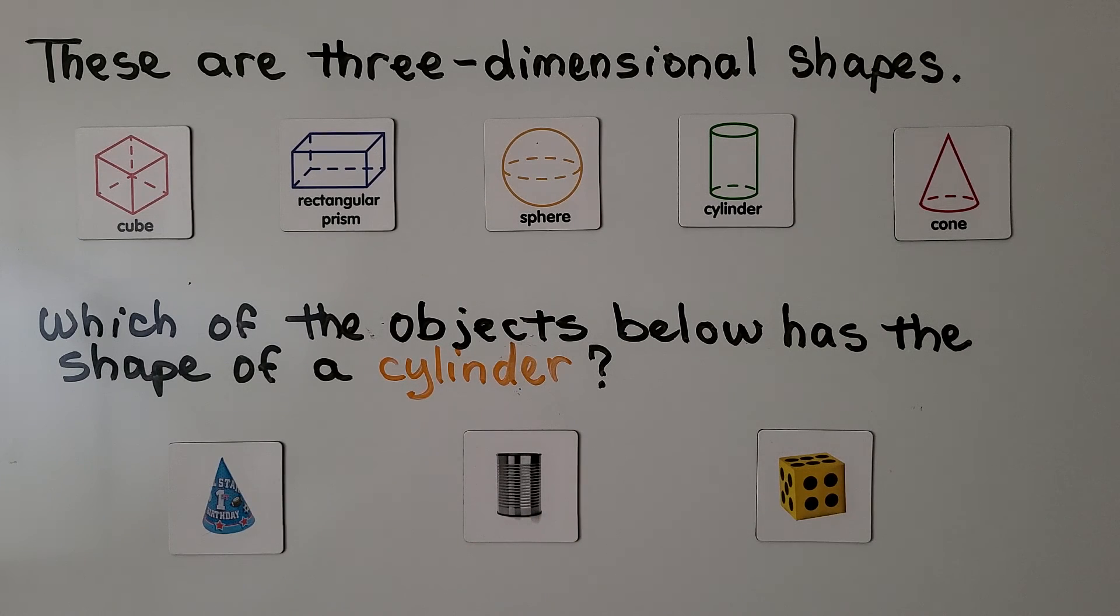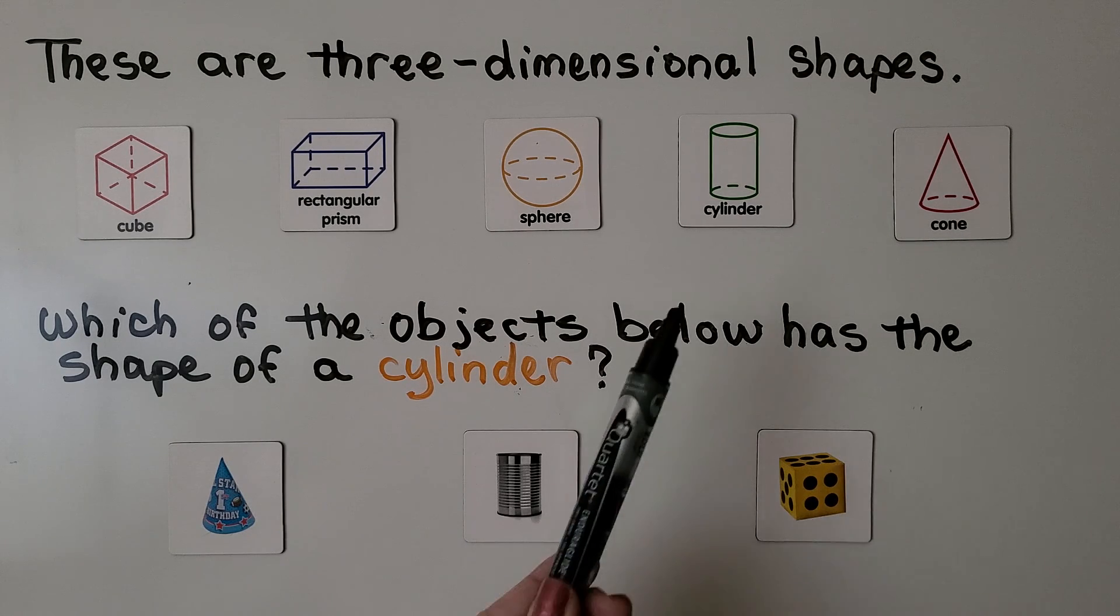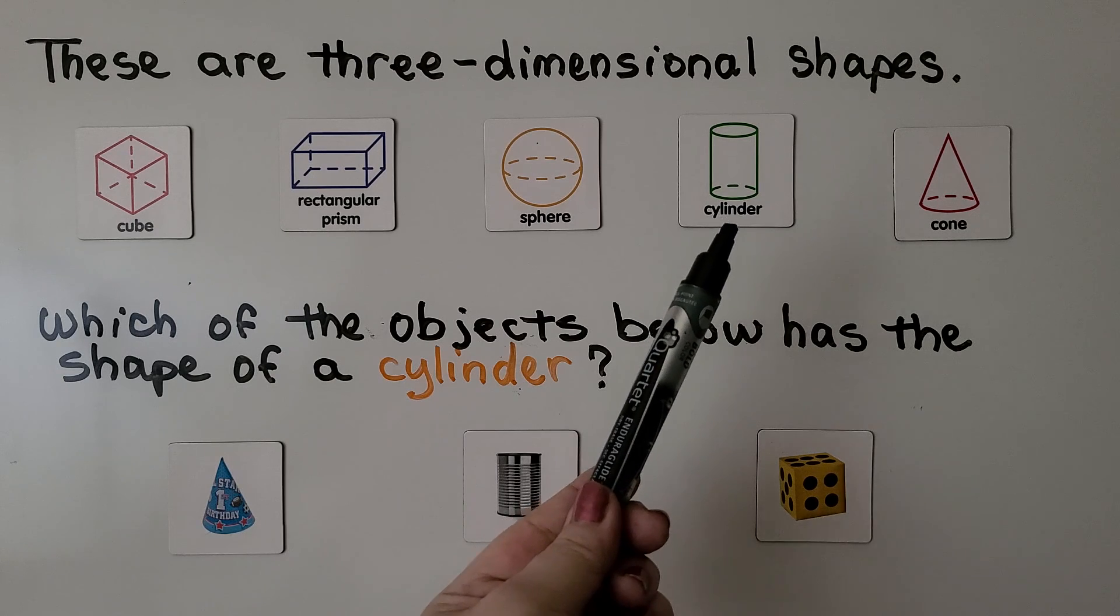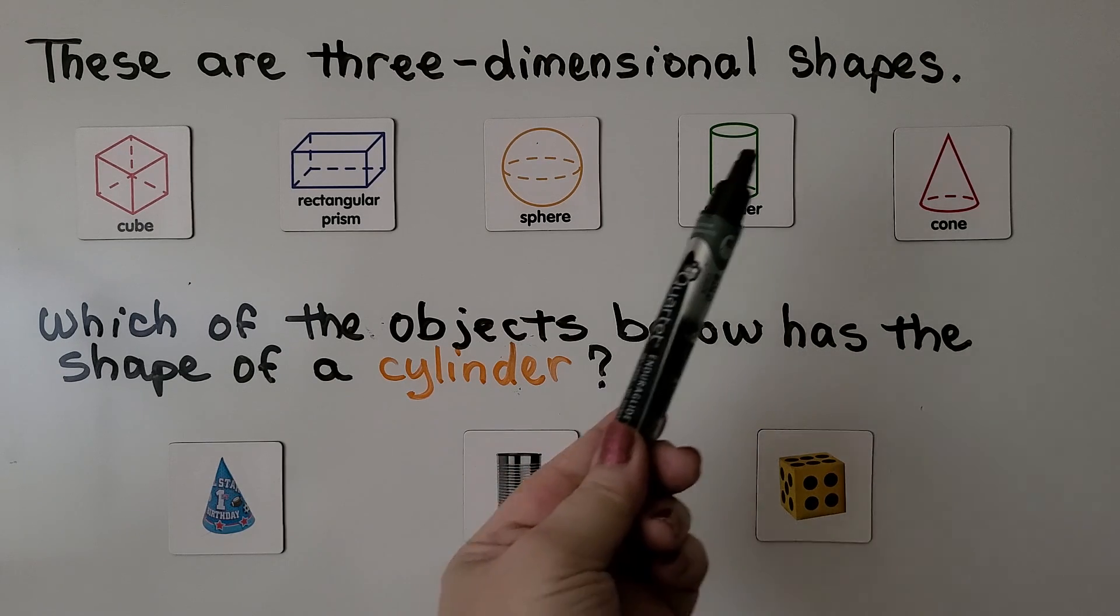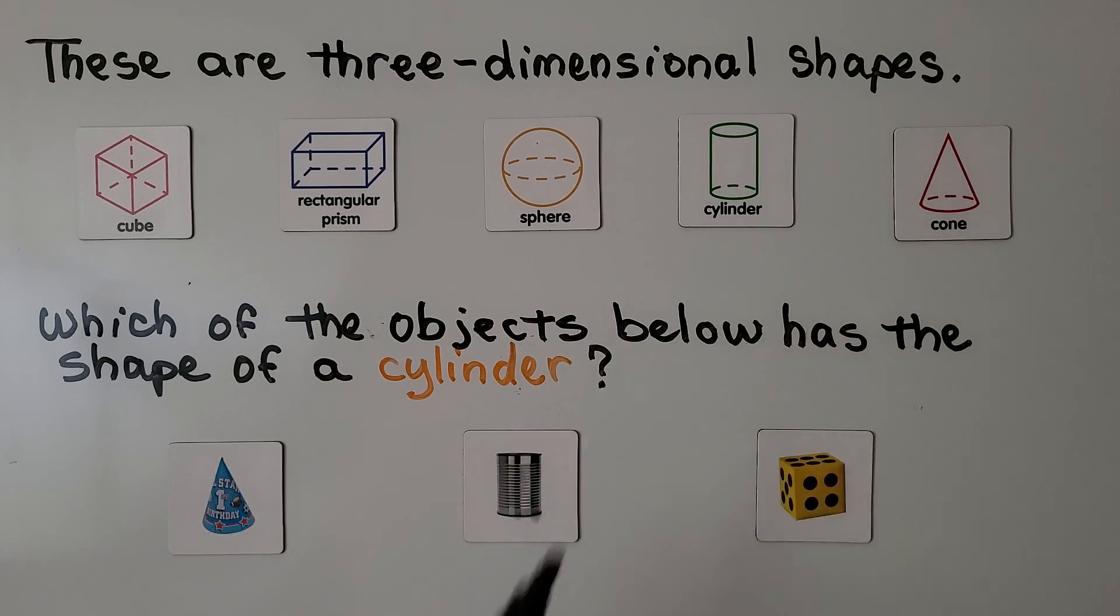Which of these objects below has the shape of a cylinder? When we look at the cylinder, we see it has a flat top and bottom, and it's got a curve going around. So would you say the party hat, this can of food, or this number cube has the shape of a cylinder?